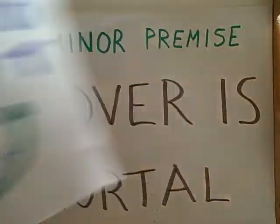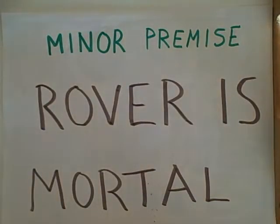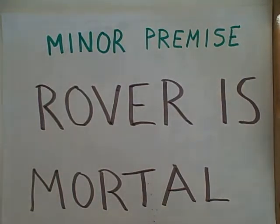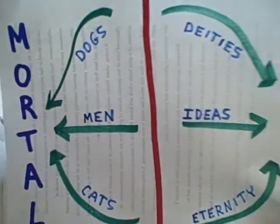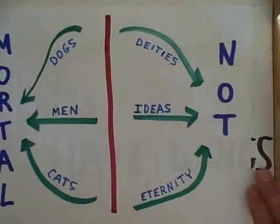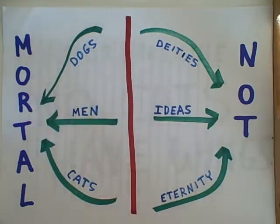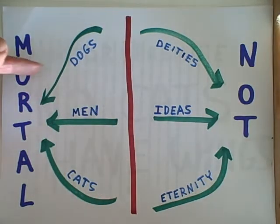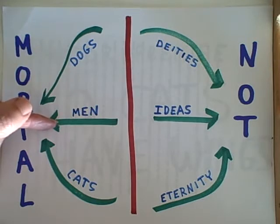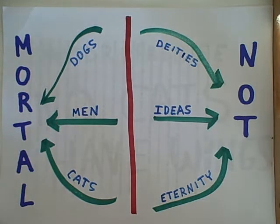Let's try another minor premise that will not yield a valid conclusion: Rover is mortal. All we know is that Rover is going to end up over here on the mortal side. We don't know if Rover is a dog, a man, a cat, or some other mortal creature.